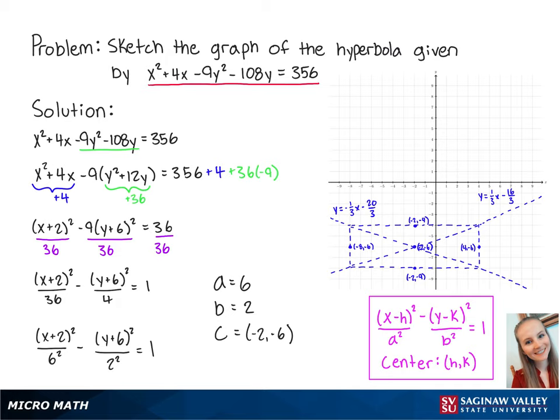Since x squared is positive in this problem, the hyperbola is going to open up to the left and to the right. And this completes the problem.